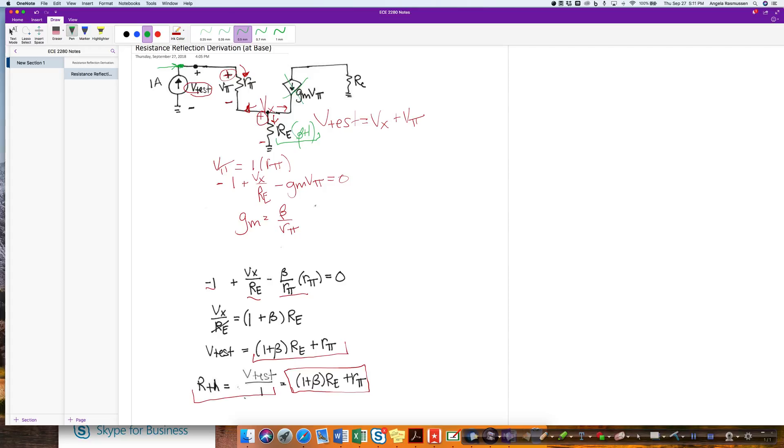I can now take a pathway from this node to ground. My pathway goes through the Rpi and then through that resistance. Therefore, my R equivalent is Rpi plus Re times beta plus 1. And that would be my answer just by inspection.